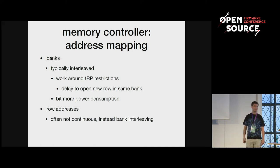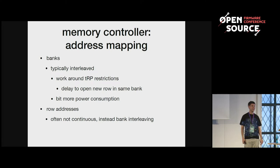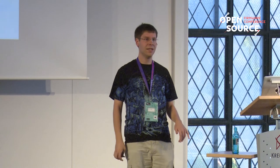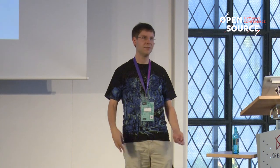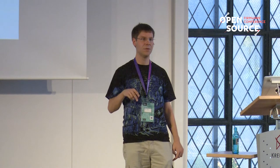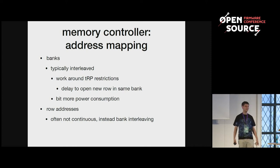Then we have the banks — the eight different sets of the memory arrays. Those are typically mapped interleaved, so basically when you finish reading one row you want to read the next row from a different bank. Then you can open that new row before closing the row you're currently reading, and you can basically mask the latency because when one row is closed, the other is already opened. Having more banks open also increases the power consumption but gives more throughput.